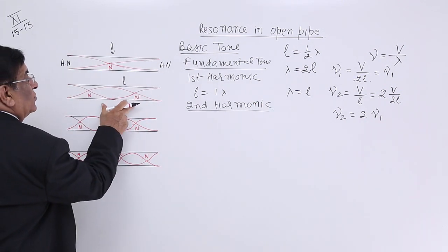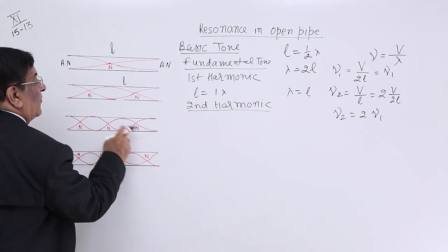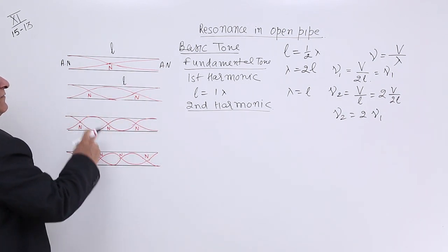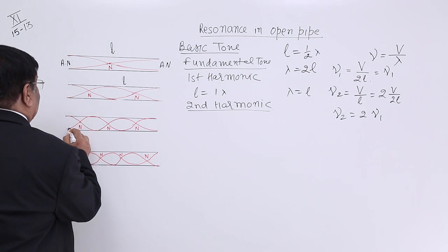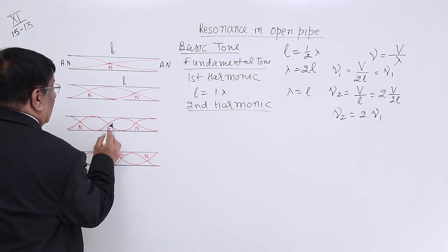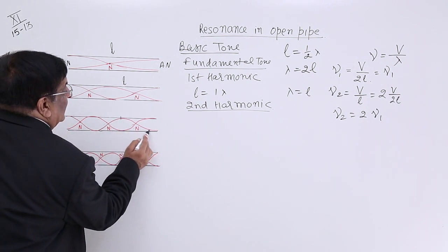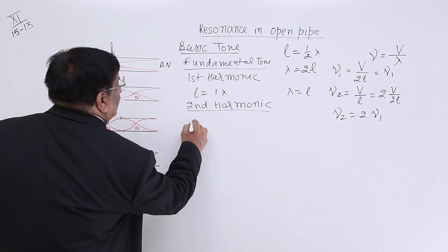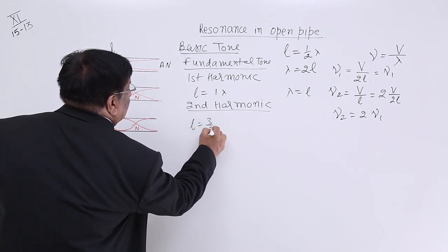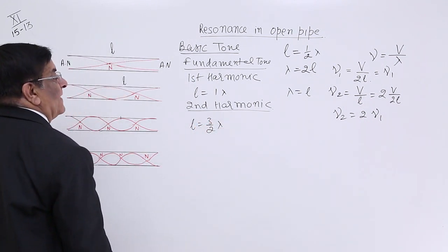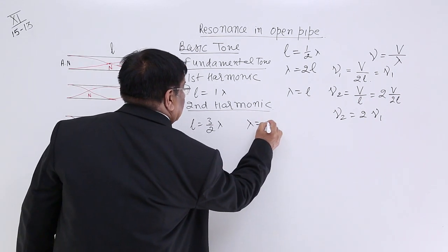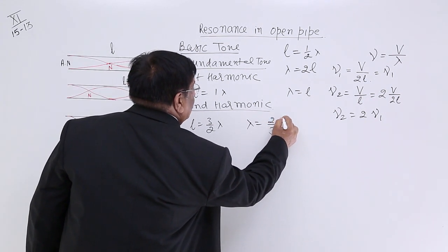Now here, after 2N, this formation is also there. It is also giving us some frequency. And here we find it crest to crest, 1 lambda and to trough, half lambda. So here length is equal to 3 upon 2 lambda. So how much is lambda is equal to 2 upon 3L?